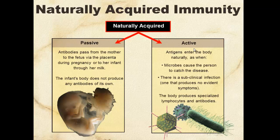If it's naturally acquired and active, that's what we'd probably consider most common when we talk about immunity. A person is exposed to the disease and then produces the antibodies themselves. It's natural and it's active — we do it ourselves.